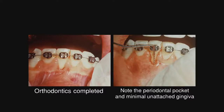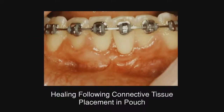Now this is a different case: orthodontics is complete, which means the marginal tissue is not going to rise. More importantly, on the right, look at the probing depth — we have a periodontal pocket here, and any gingiva present would be unattached. We went in and did a connective tissue graft placed in a pouch, and note that the frenum was not removed because it is at the mucogingival junction, so it is not aberrant and is not making any pull on the gingiva.